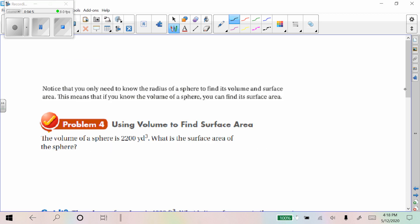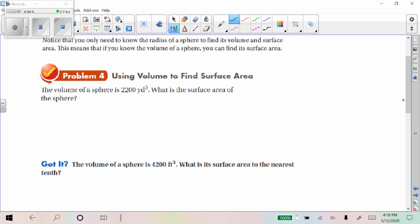All right, what if we want to use a volume to find the surface area? So the volume, 2200, is equal to 4 thirds pi r cubed. So we're going to have to use a cube root to undo this. Let's just first get the r cubed by itself. To do that, we have to